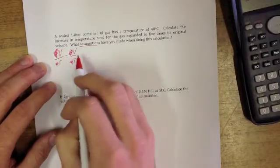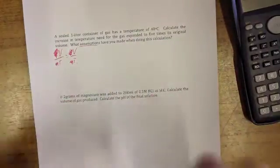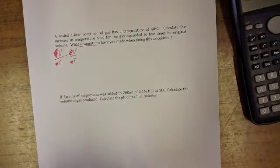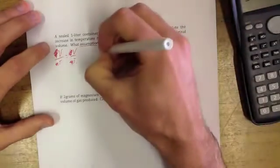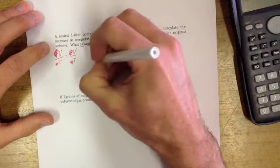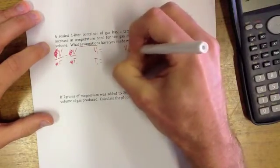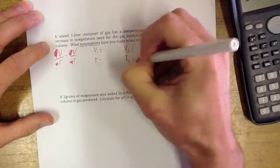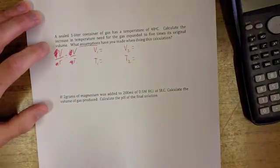That leaves us with V over T equals V over T, which is known as Charles' law. Because you know Charles, he dealt with temperature and expanding gases by heating them up. So what we're left with is V1 equals, T1 equals, V2 equals, and T2 equals. What are our values here going to be?